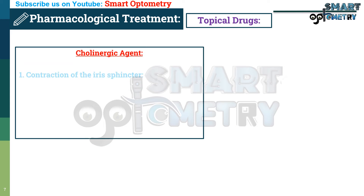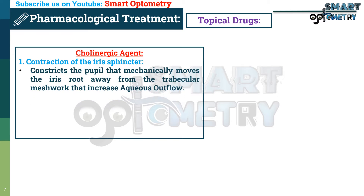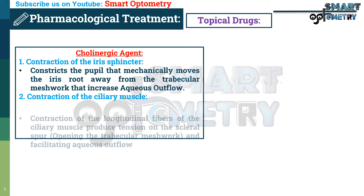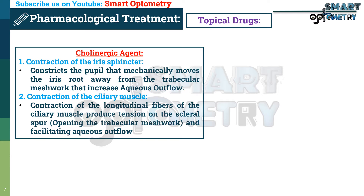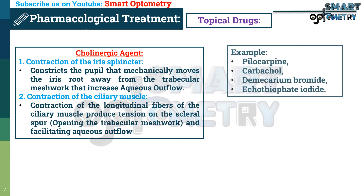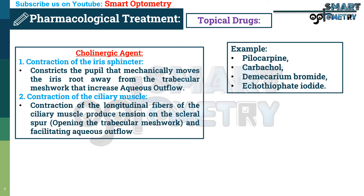Cholinergic agents work through two mechanisms. First, contraction of the iris sphincter constricts the pupil, which mechanically moves the iris root away from the trabecular meshwork, increasing aqueous outflow and decreasing IOP. Second, contraction of the ciliary muscle — specifically contraction of the longitudinal fibers — produces tension on the scleral spur, facilitating aqueous outflow, which in turn decreases IOP. These are examples of cholinergic agents.